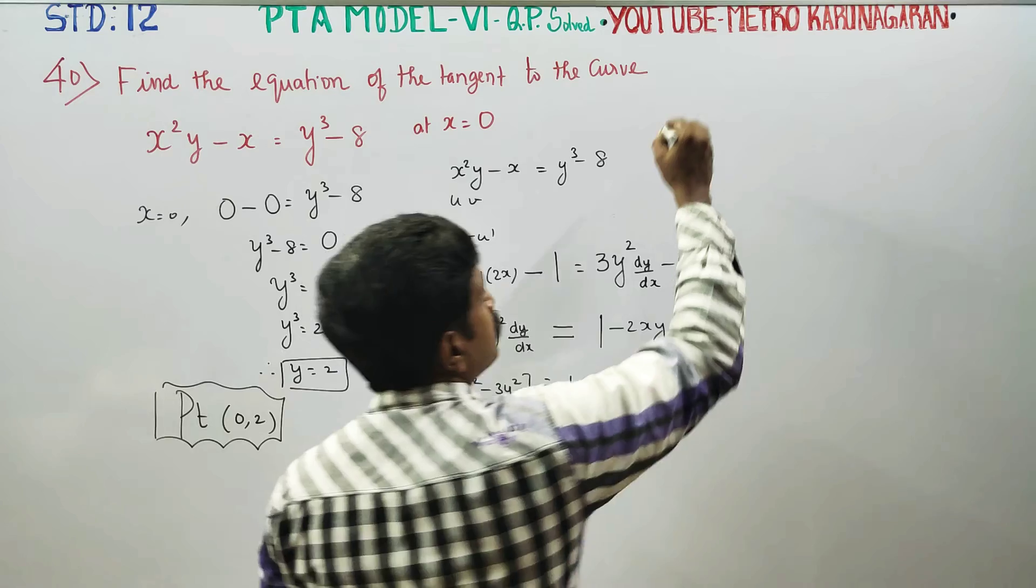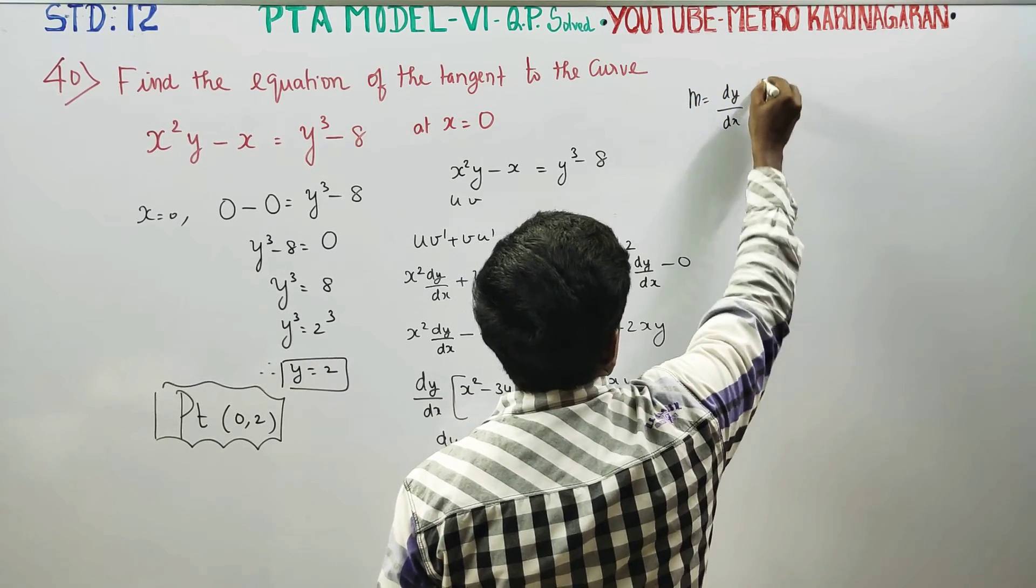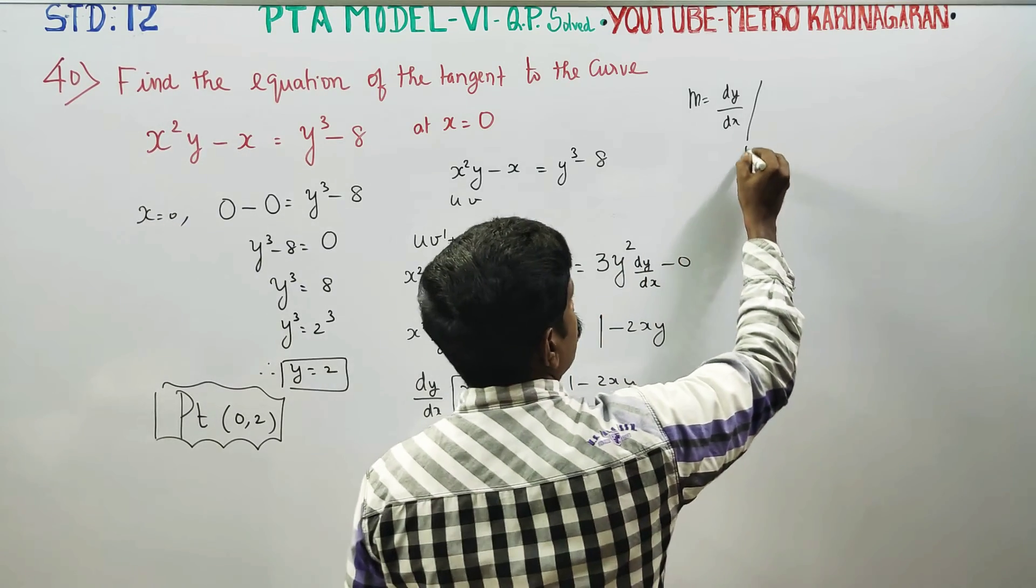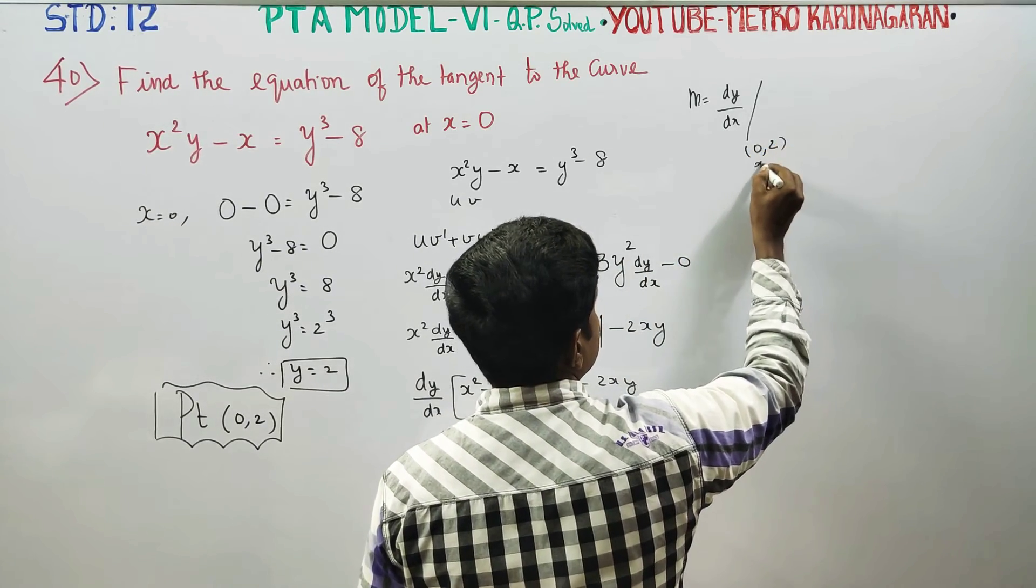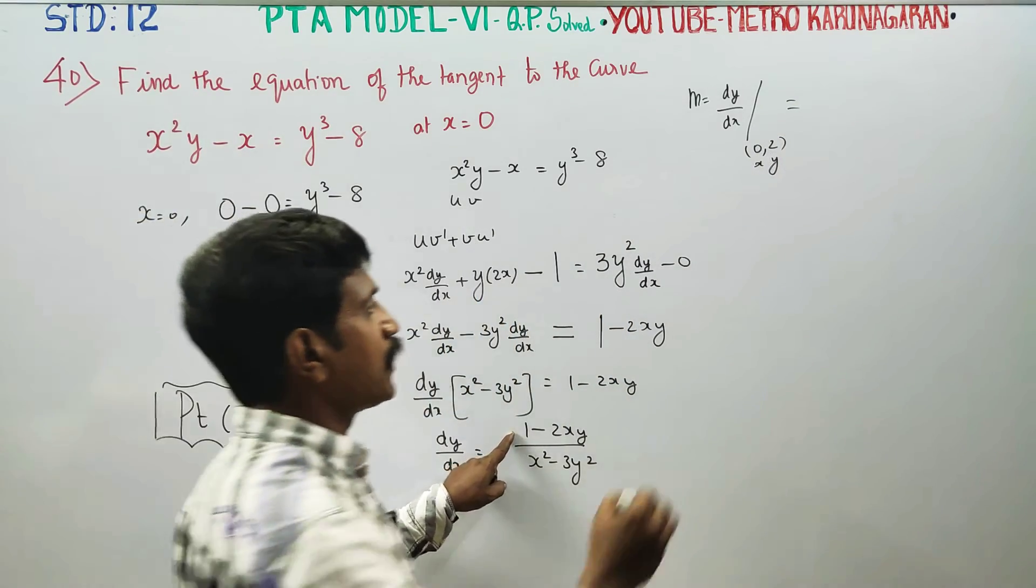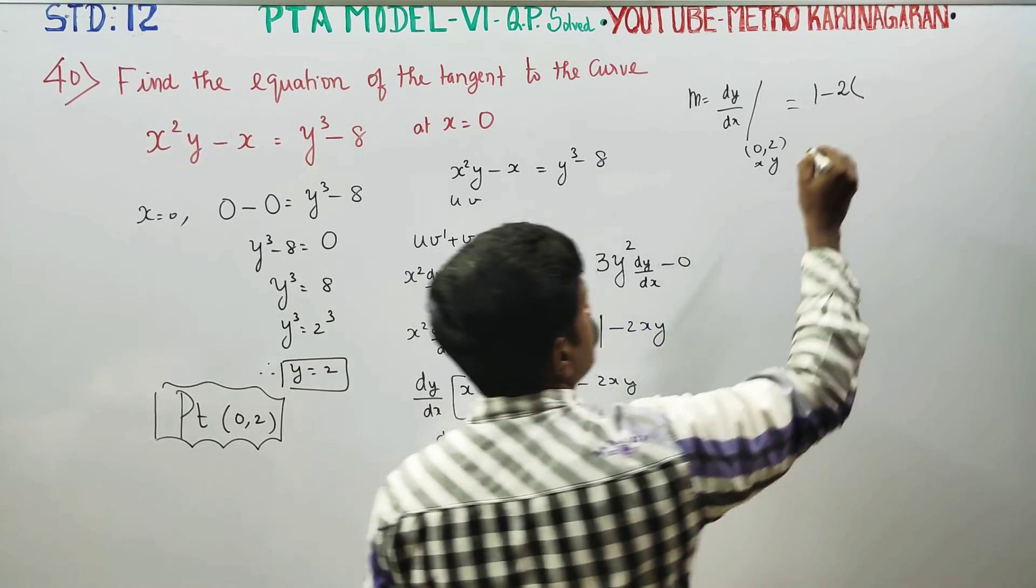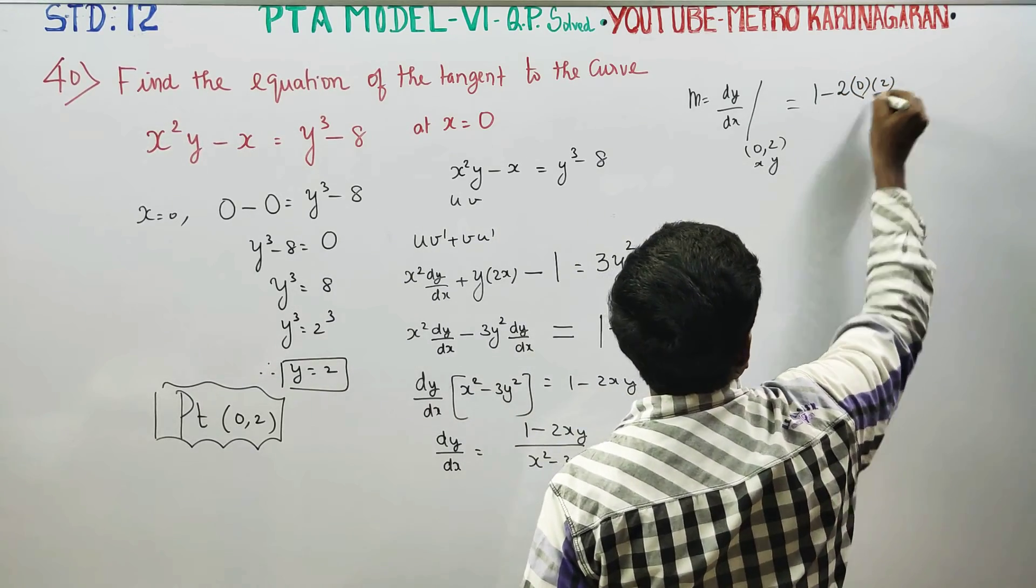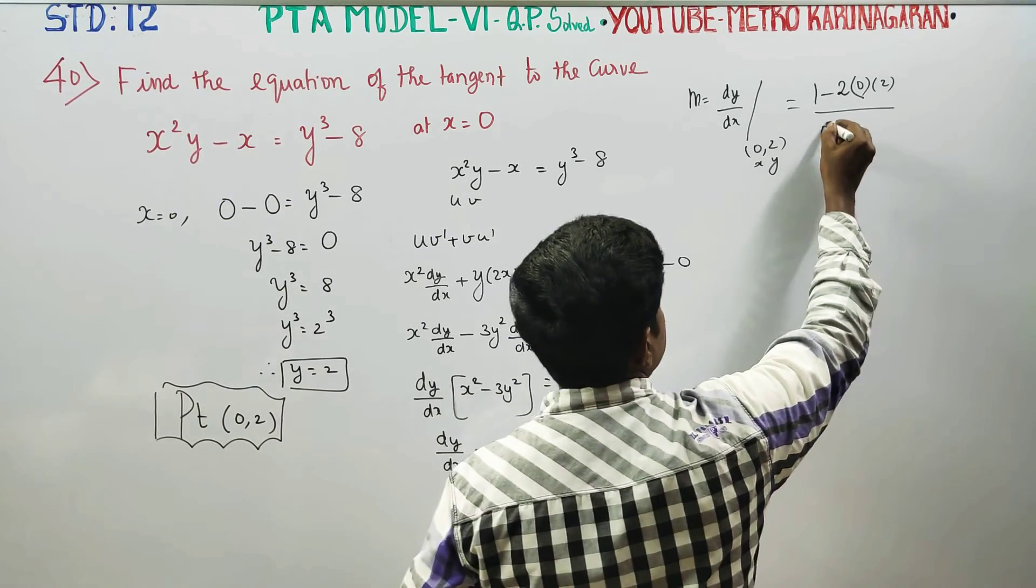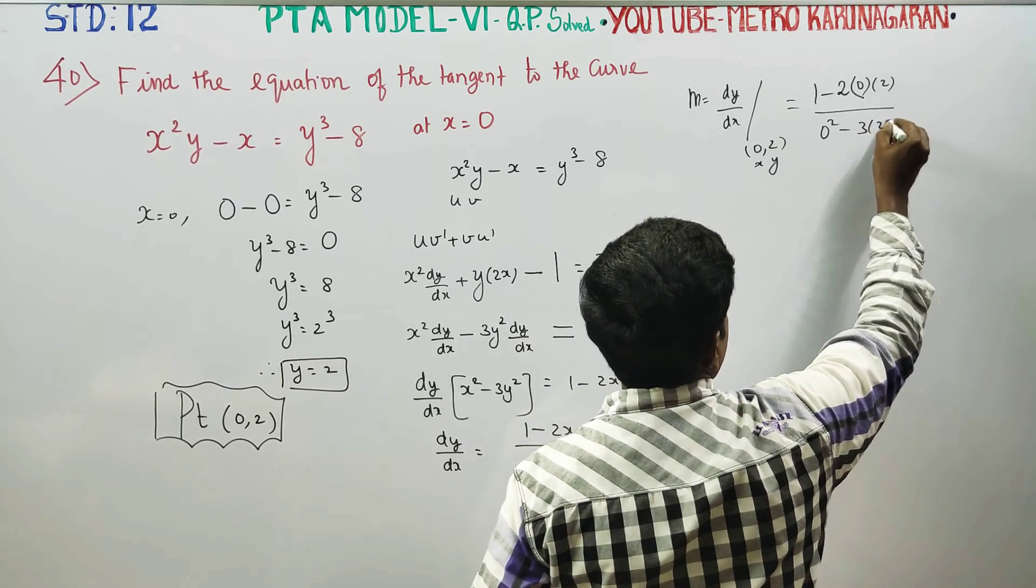This is the slope. m is equal to dy by dx at the point. Our point is 0, 2. Therefore, instead of x, substitute 0 and instead of y, substitute 2. 1 minus 2 times x which is 0 times y which is 2 over 0 squared minus 3y squared, 3 into 2 squared.